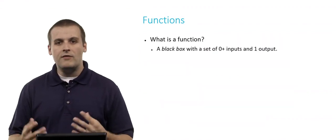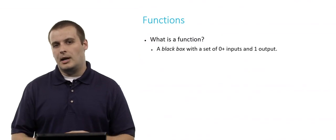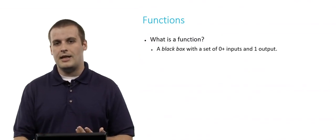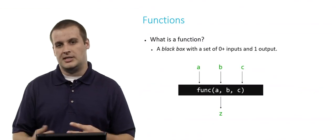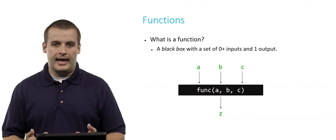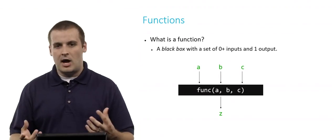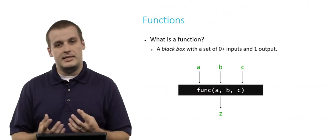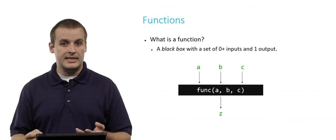What is a function? Well, a function is really nothing more than a black box — a black box that has a set of zero or more inputs and a single output. For example, this might be a function called 'func' that takes three inputs, a, b, and c. Inside that black box we don't know exactly what it does, but it processes the inputs in some way and gives us a single output, in this case z.